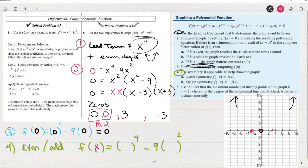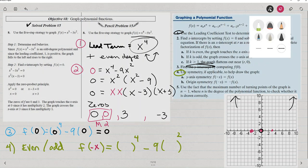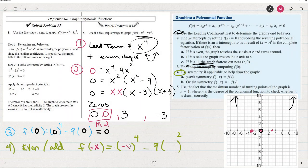then f of the opposite of x. You see what's going to happen here? This opposite of x to the fourth, that's just x to the fourth because four negatives turn to a positive.